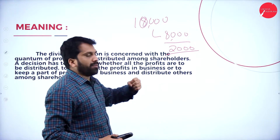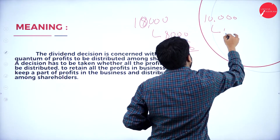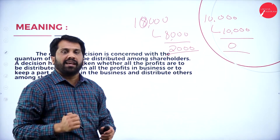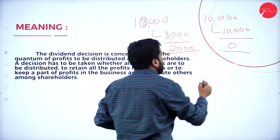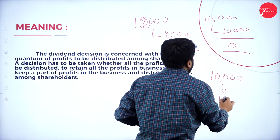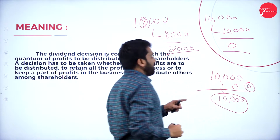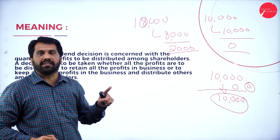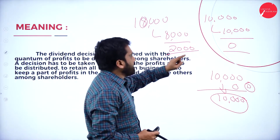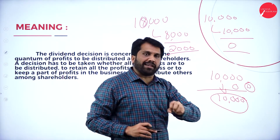One more example: they got 10,000 and gave the complete 10,000 to shareholders — retained earning is zero. Example number 3: they got 10,000, saved the complete 10,000, and gave dividend of zero — so complete 10,000 is retained earning. In example 1, they gave almost 80% (8,000). In example 2, they gave 100% to the shareholder.